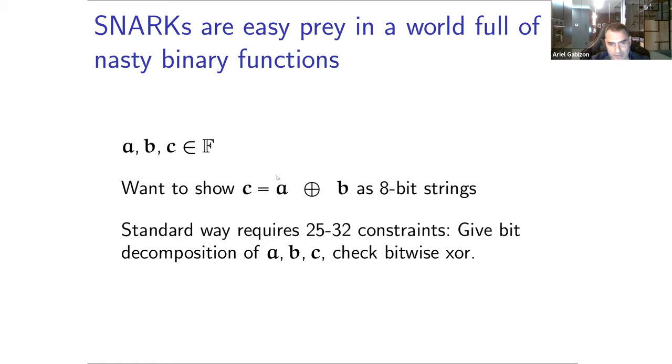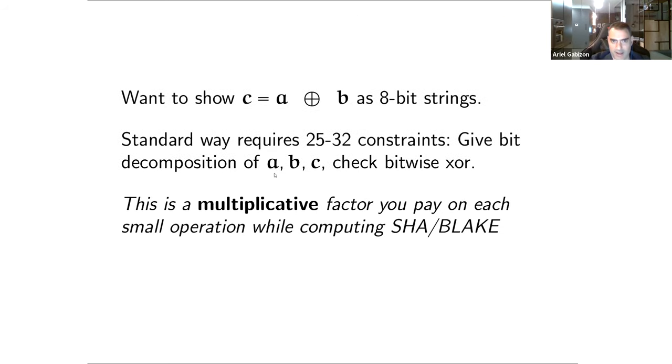The standard way of doing this is to put a lot of variables in your constraint system, one for representing each bit of A, B, and C, and now do these quadratic bitwise constraints. This would cost you say 25 to 32 R1CS constraints.